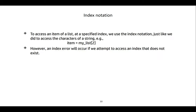With index notation, we use square brackets and provide an integer to specify which item inside the list we wish to access. However, if there is no such item at that index inside the list, we will get an IndexError.